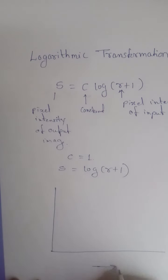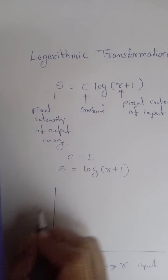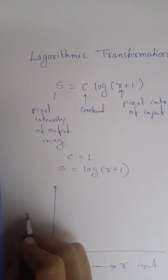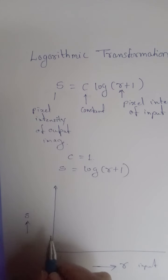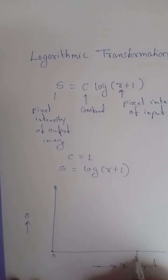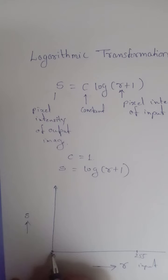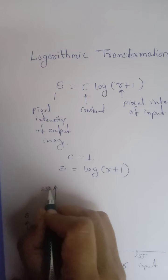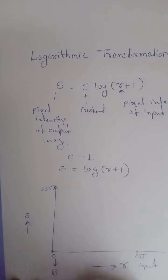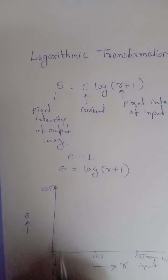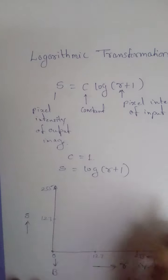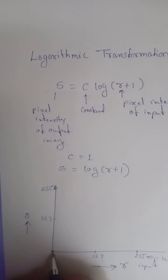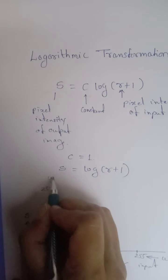Let the x-axis represent r, that is the pixel intensity of the input image, and the y-axis represent s, the pixel intensity of the output image. The pixel intensity of the input image varies from 0 to 255, where 0 represents perfect black and 255 represents perfect white, with 127 somewhere in the middle. In the output image also, 0 represents perfect black and 255 represents perfect white.